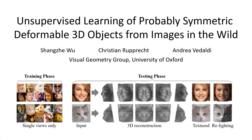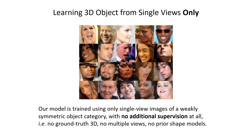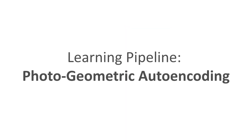We introduce an unsupervised method for learning probably symmetric deformable 3D objects from images in the wild. Our model is trained using only single-view images of a weakly symmetric object category, with no additional supervision at all, such as ground truth 3D, multiple views, or prior shape models. In order to do this, we propose a learning pipeline which we call photo-geometric auto-encoding.